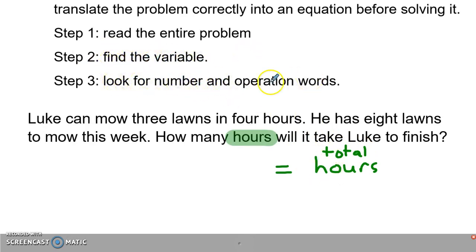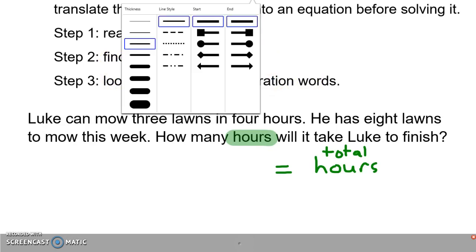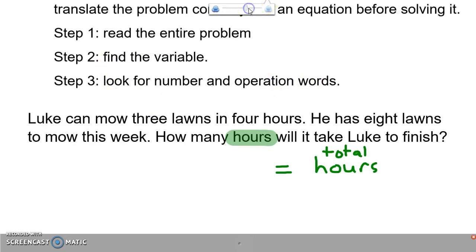That's looking for number and operation words. So if I look through - here's a number, three; there's another number, four; there's another number, eight. 'This week,' 'how many hours' - and that's it. Those are my number words, so I know that I'm going to be using those and those numbers are going to be important.